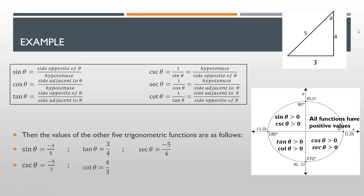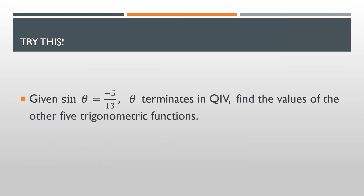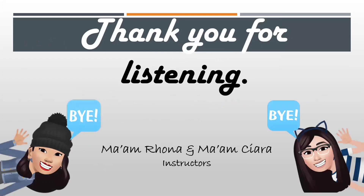Please take note of these signs. Okay, try this example: given sine theta which is equal to negative 5 over 13, and theta terminates in quadrant 4, find the values of the other five trigonometric functions. Thank you for listening.